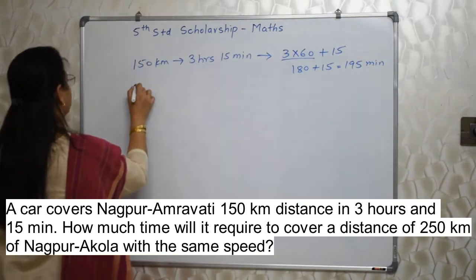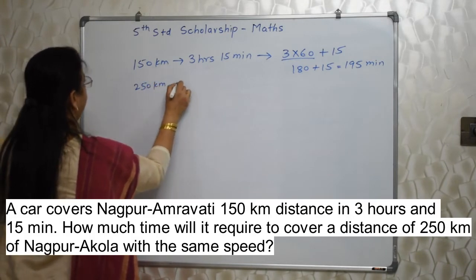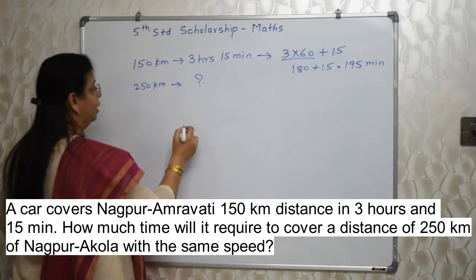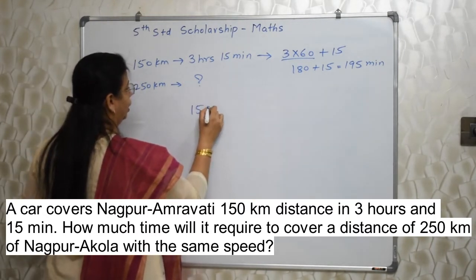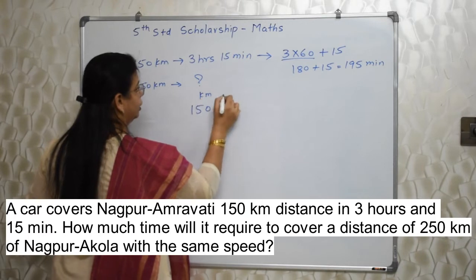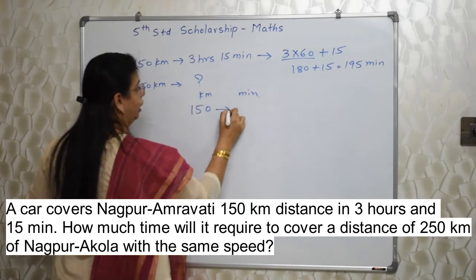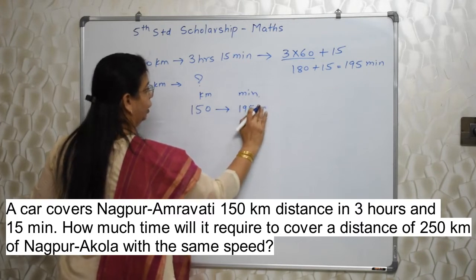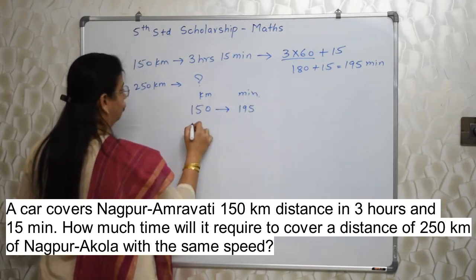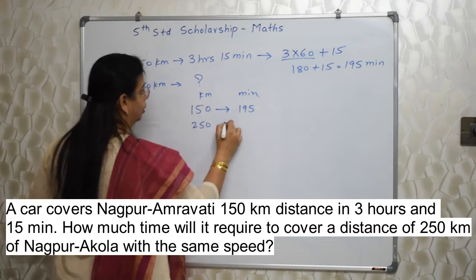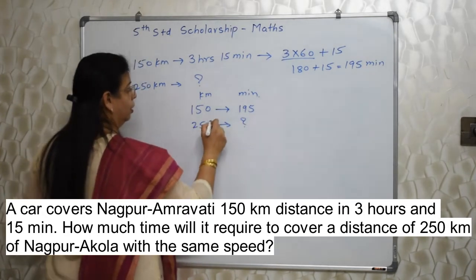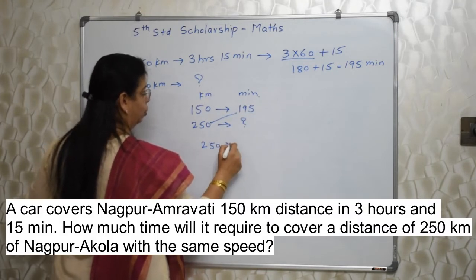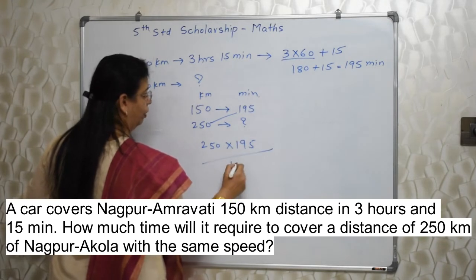Now they are asking us for 250 km with the same speed — how much time will it require? Very, very easy. Let's rewrite it here. 150 km in 195 minutes. For 250 km, how many minutes? You all know cross multiplication: 250 into 195 upon 150.